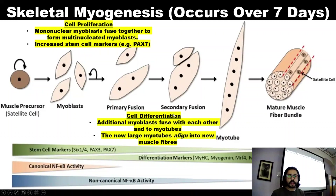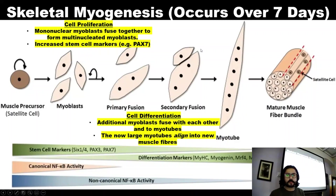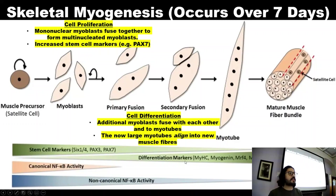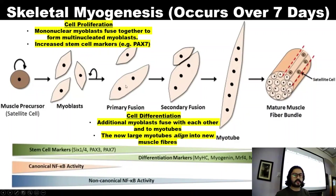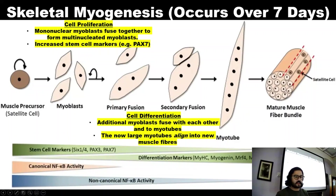As the growth phase ends, we enter the differentiation phase, where the multi-nucleated myoblast aligns to form a myotube — this is the differentiation process. Differentiating markers increase at this stage while the stem cell markers, having enabled the growth of multi-nucleated cells, have done their job. Differentiation is driven by a separate set of markers, and throughout much of this process, nuclear kappa factor B (NF-κB) activity is also ongoing at varying levels.